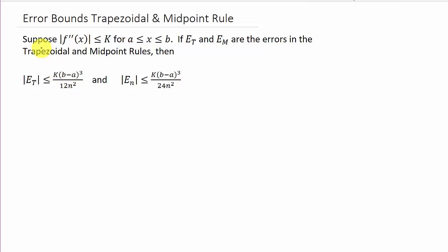So, suppose f double prime of x, the absolute value, is less than or equal to k when x is between a and b. And if the error for the trapezoidal rule, that's the errors in the trapezoidal rule, e sub t, the absolute value, is less than or equal to k times b minus a cubed over 12n squared.